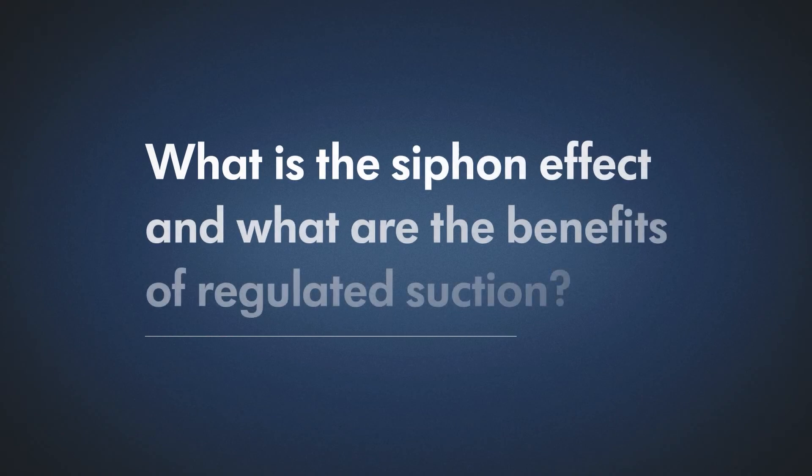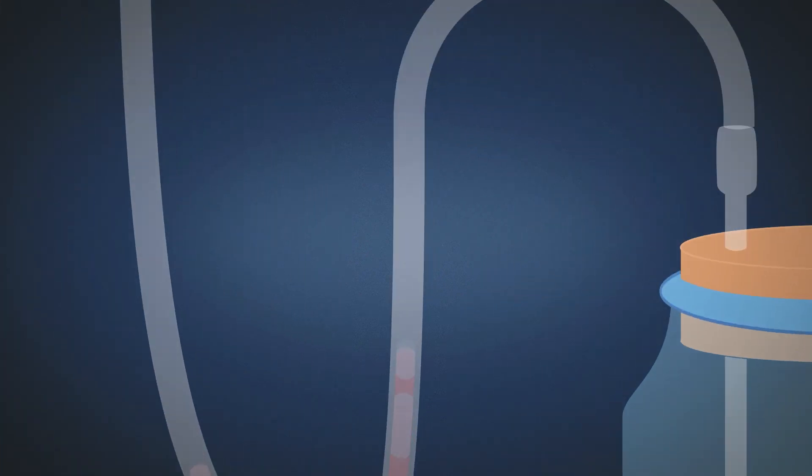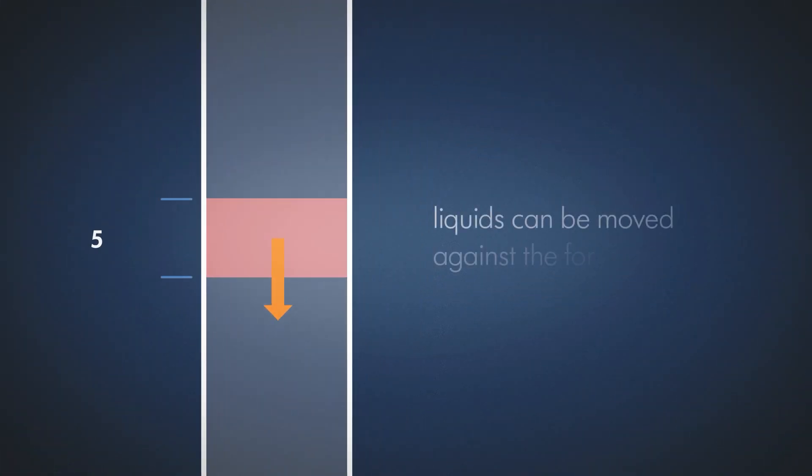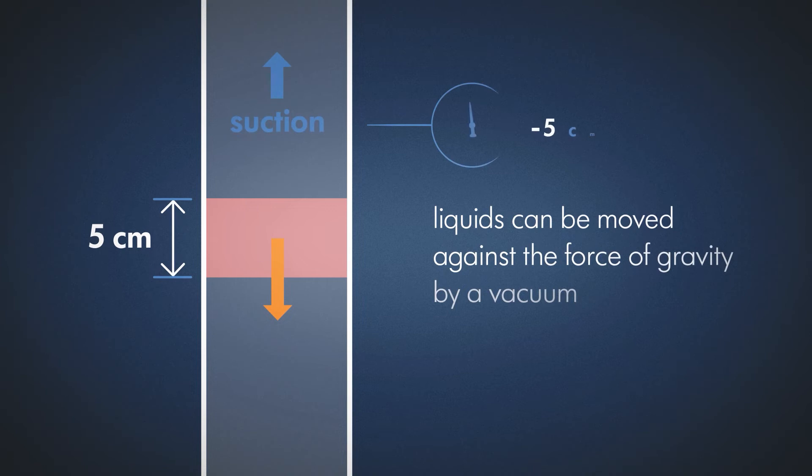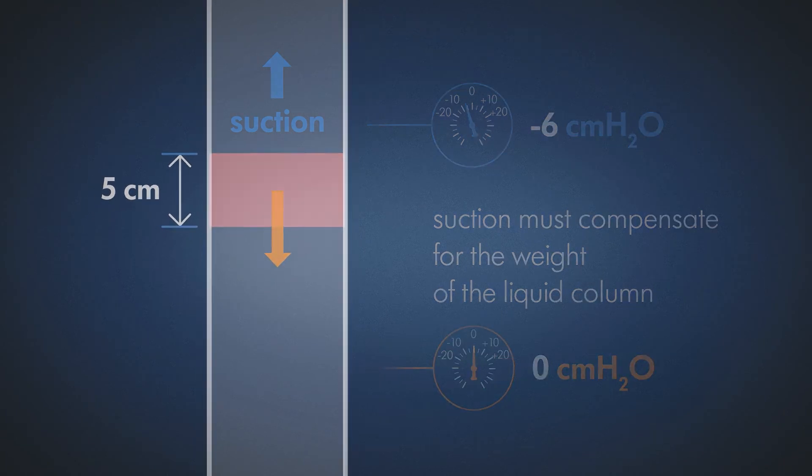What is the siphon effect and what are the benefits of regulated suction? Liquids contained within a hose can be moved against the force of gravity by a vacuum. The suction must compensate for the weight of the liquid column in order to raise it.